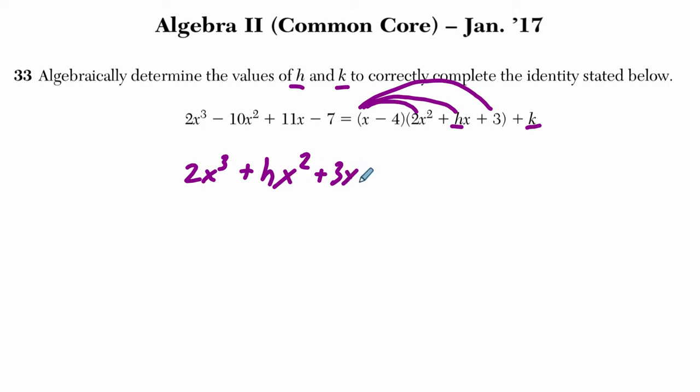And then I want to distribute this negative 4: negative 8x squared, negative 4 times hx is negative 4hx, and then negative 4 times 3 is negative 12, and then we solve this plus k.